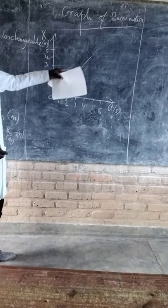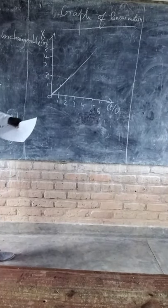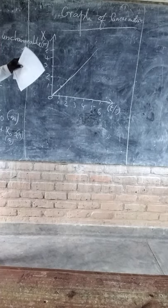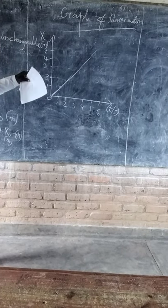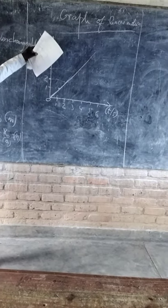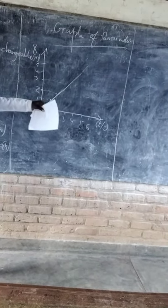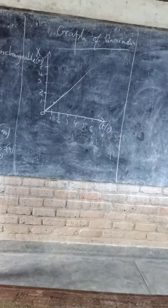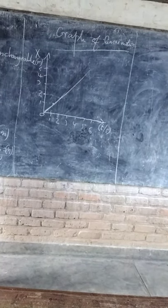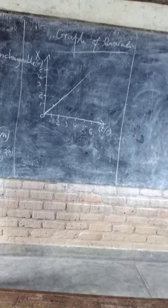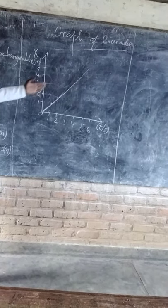What does this mean? This best fit line means that our velocity — the slope — the slope of x by time, the ratio of x by time, is velocity. And this velocity is constant.